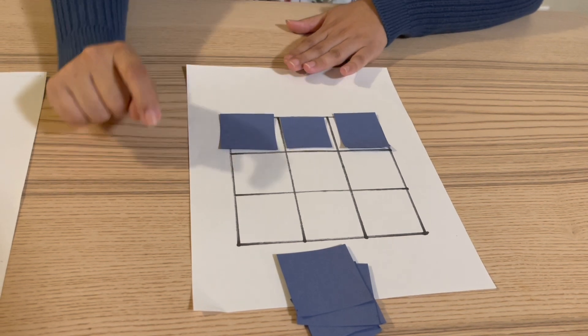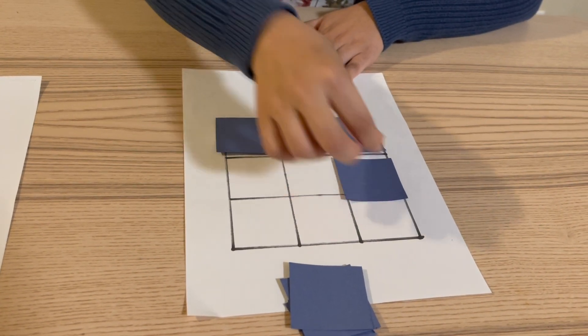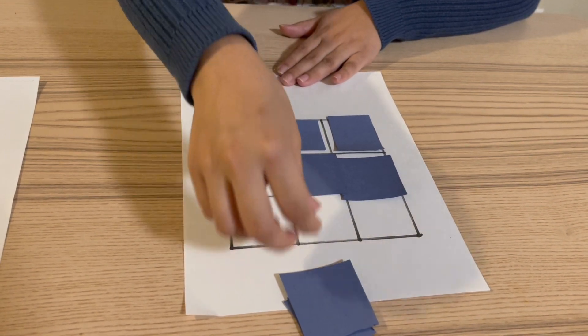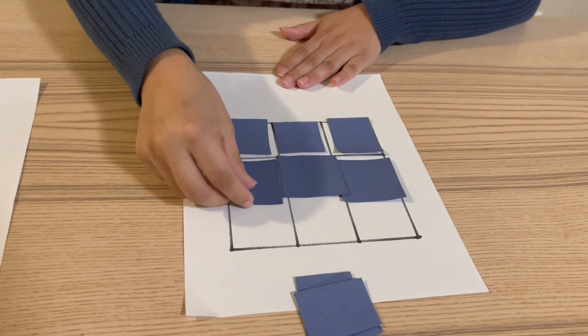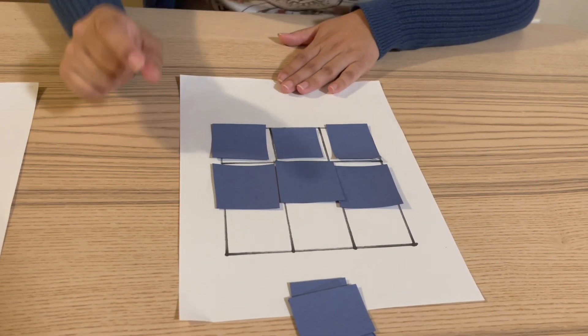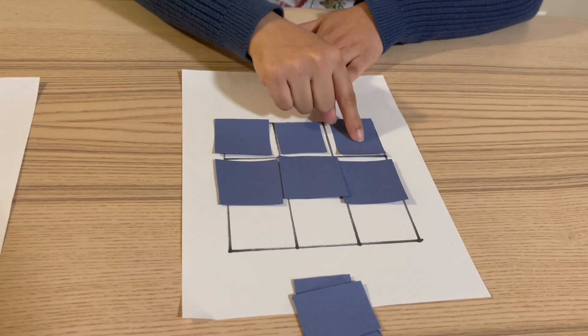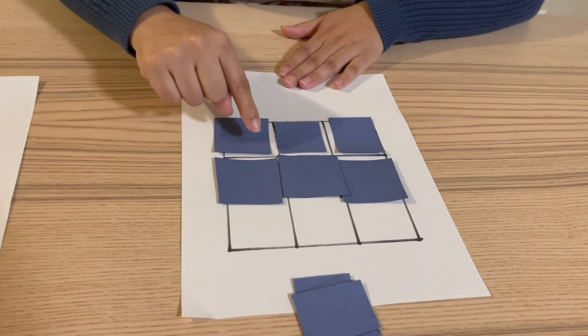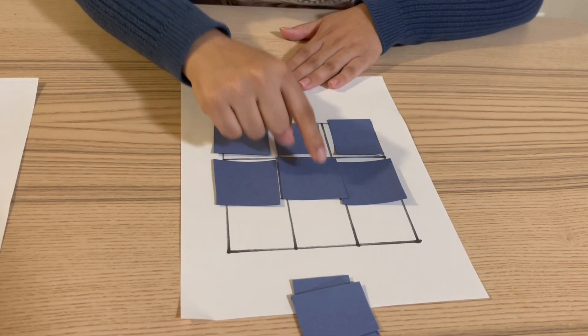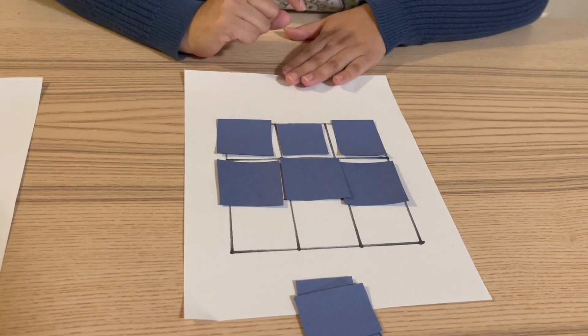Let's keep going. Have the student put on one more square, then take turns and keep going. When we get to the second row, we can count again. Let's count how many squares we put down so far: one, two, three, four, five, six. We have six squares so far.